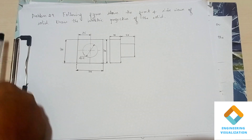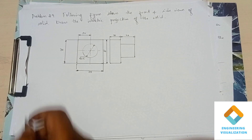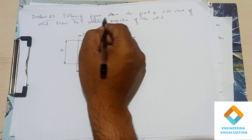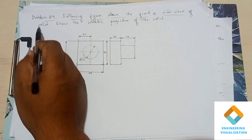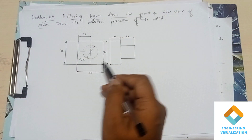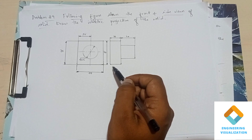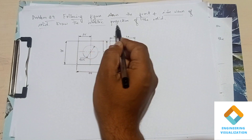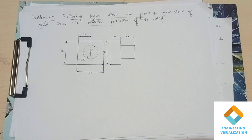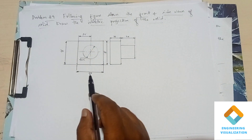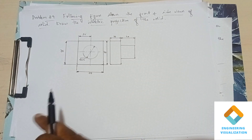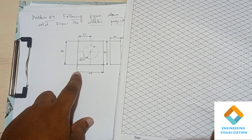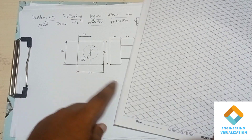Welcome to the engineering visualization channel. This is problem number 29 from isometric drawing. The following figure shows the front and side views of a solid. Using these two diagrams — the front and side views — we have to draw the isometric projection of the solid.